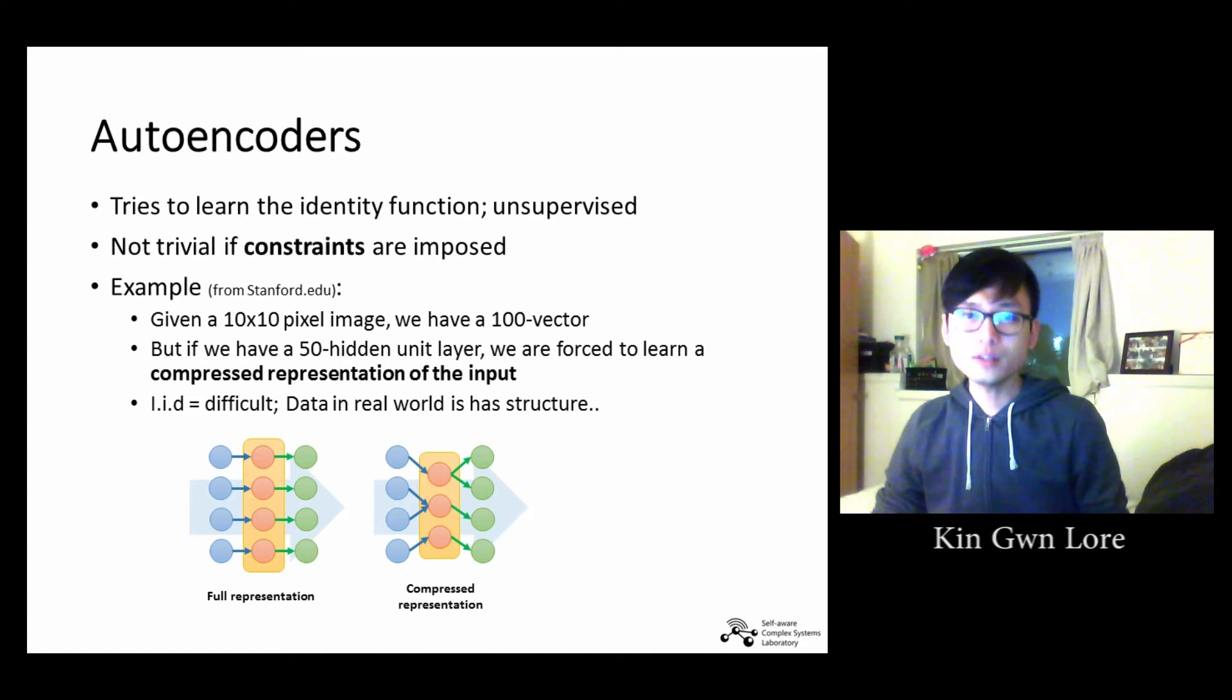If the inputs are IID random, learning the structures would be difficult. However, in reality all data are not random and the input features are often correlated. This algorithm will be able to discover these correlations. In fact, a simple autoencoder often ends up learning a low dimensional representation, very similar to principal component analysis or PCA.